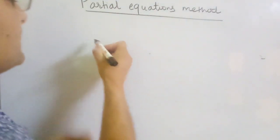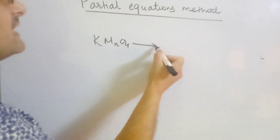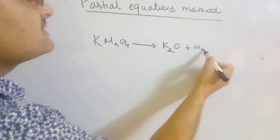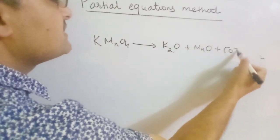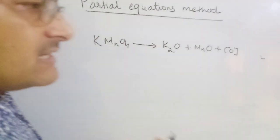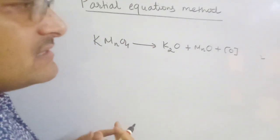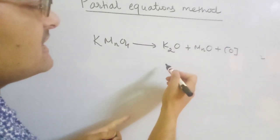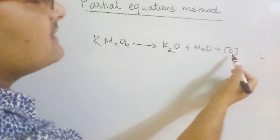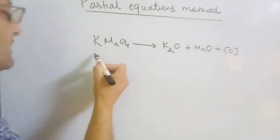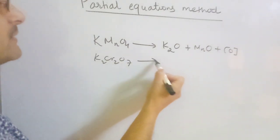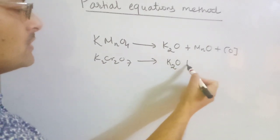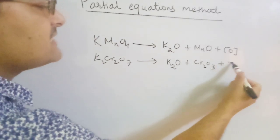If your reaction has KMnO₄, it is always decomposed into potassium oxide (K₂O) and manganese oxide (MnO) plus nascent oxygen. This you must know: when KMnO₄ is involved in the reaction, it decomposes into partial products like K₂O, MnO, and nascent oxygen. Similarly, if potassium dichromate is involved, it gives K₂O plus Cr₂O₃ (chromic oxide) plus nascent oxygen.